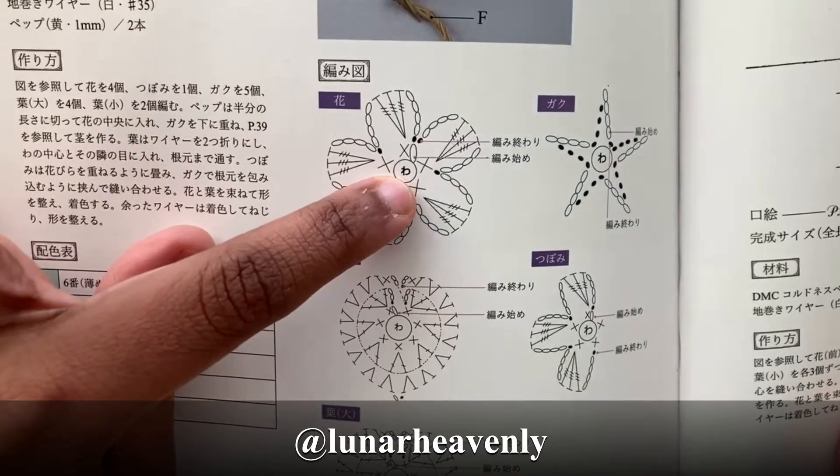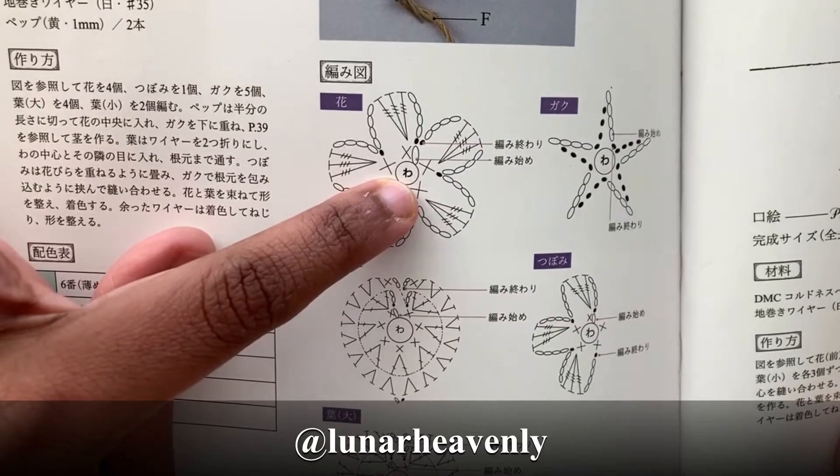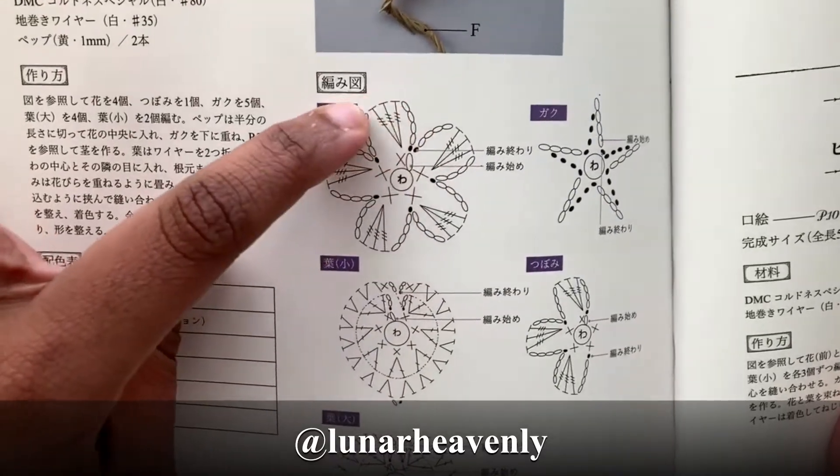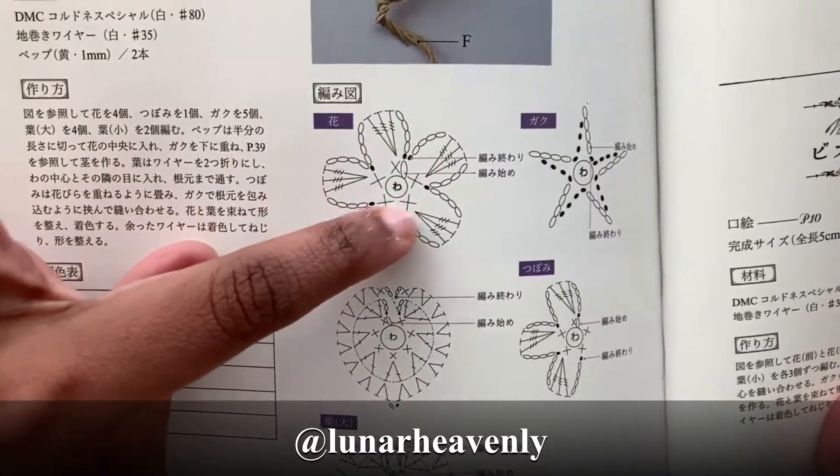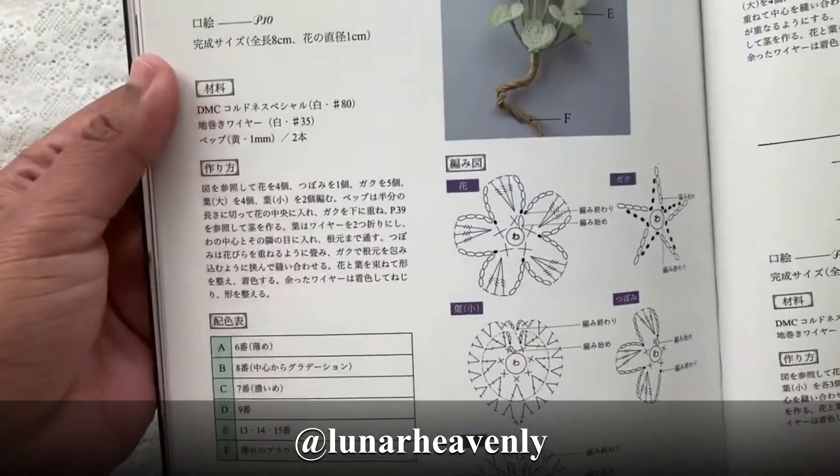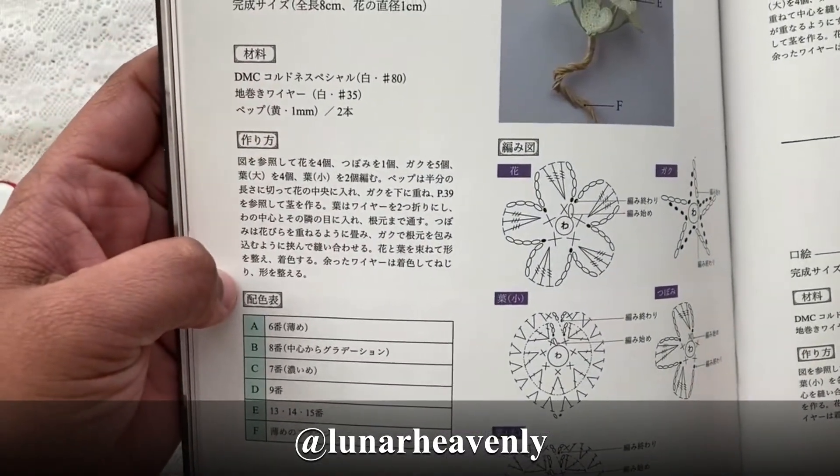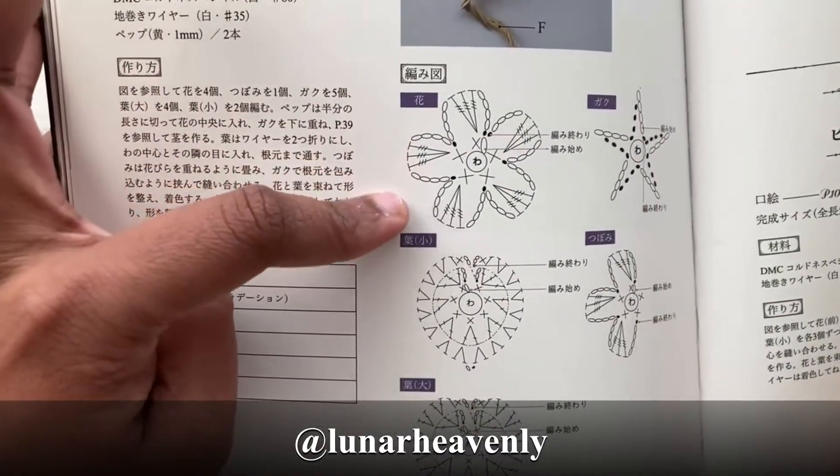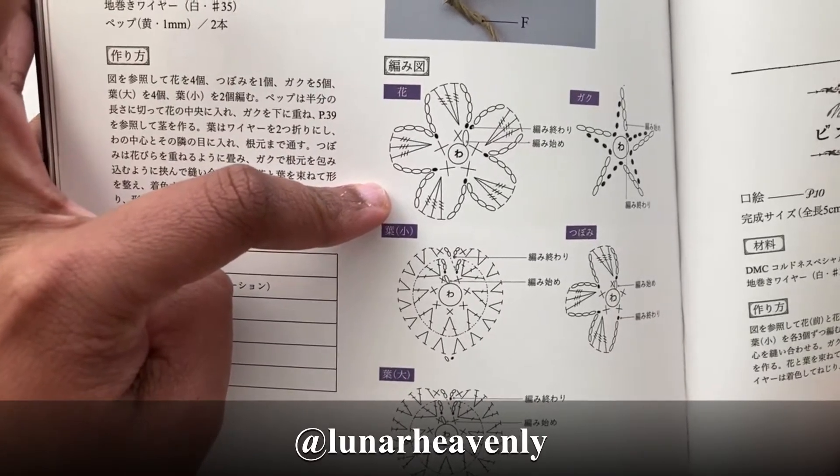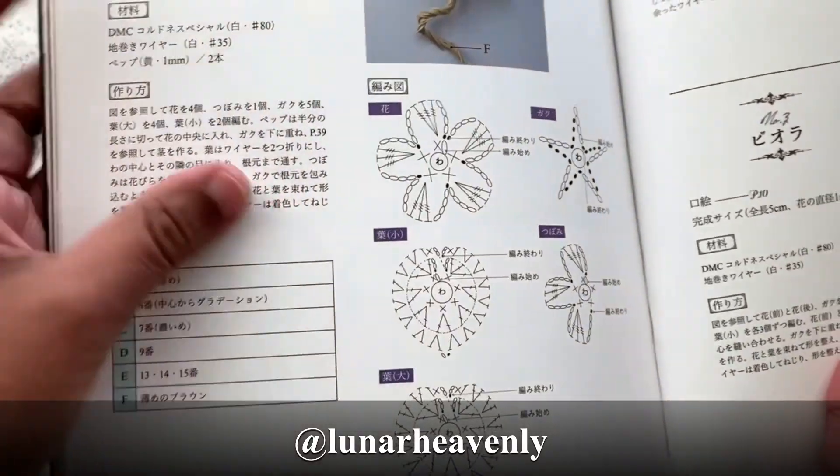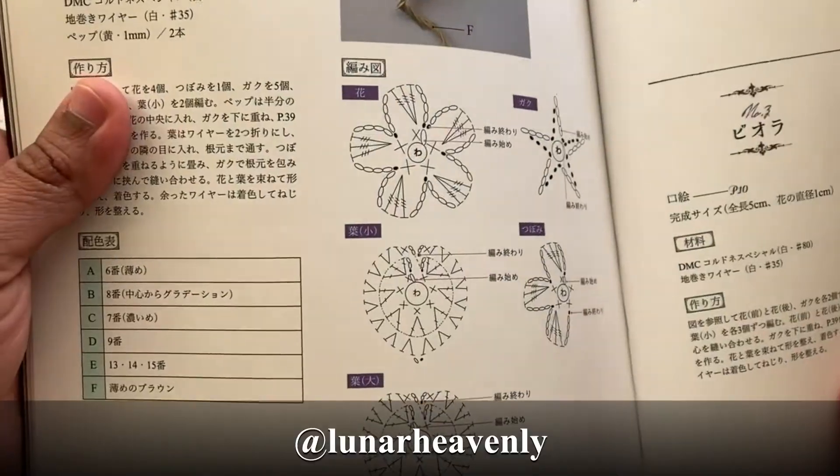So this is for your magic ring and here you can see how they have used the chart. Since I can't understand much of what has written here in Japanese, I usually just see the chart and try to replicate the pattern to form different kinds of flowers.